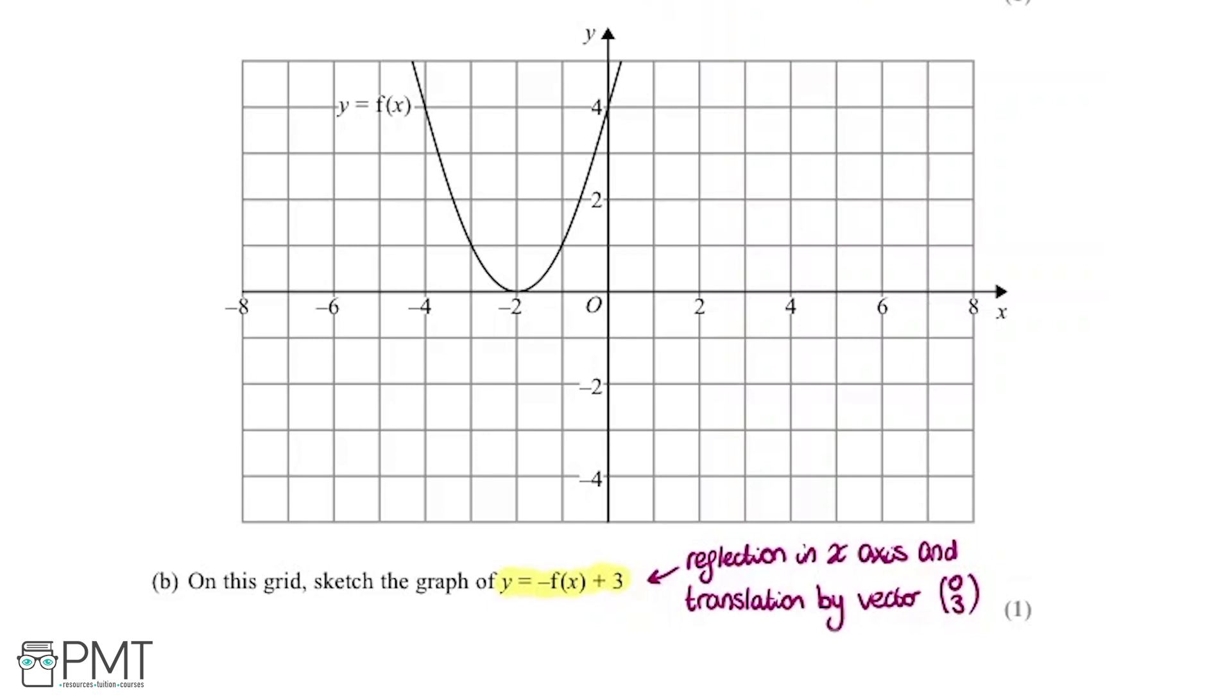It says, on this grid, sketch the graph of y equals minus f of x plus 3. And this is a little bit more complicated, because it includes two different transformations. So firstly, we've got a reflection on the x-axis. So this time, the minus sign isn't inside the bracket there, it's outside. So instead of reflecting the y-axis, we're reflecting the x-axis. Then also, the second part is a translation by vector 0, 3. So that's what this plus 3 means.